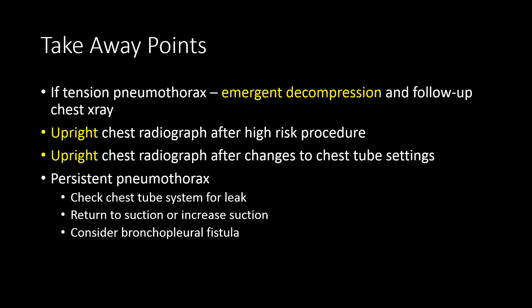Takeaway points: If there's a tension pneumothorax, consider emergent decompression, traditionally with a needle thoracostomy in the midclavicular line, but commonly with chest tube placement. Upright chest radiographs are almost always indicated after a high-risk intrathoracic procedure. You should consider getting an upright chest radiograph after making changes to your chest tube settings or after placing or removing a chest tube. If you have a persistent pneumothorax, check your chest tube system for a leak or a kink, and consider returning the chest tube to suction if it was on water seal. If there's still a persistent leak despite appropriate chest tube management, consider bronchopleural fistula in your differential diagnosis and consider consulting thoracic surgery.